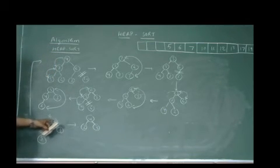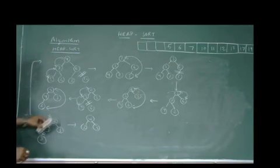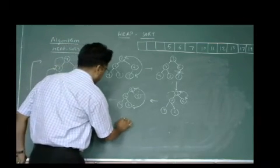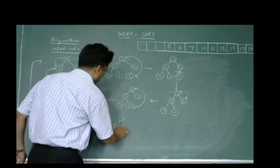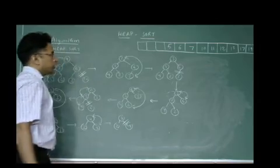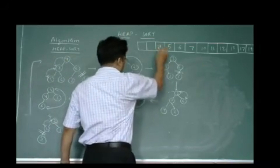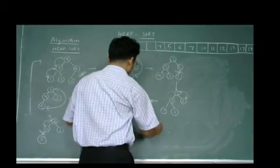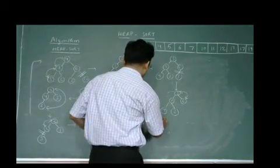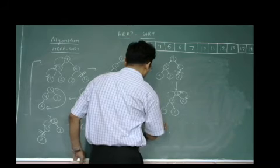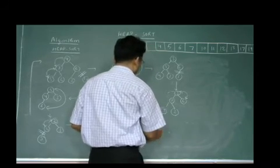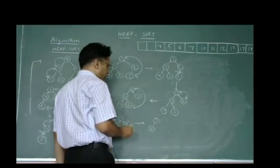Again the first element is swapped with the last element. After swapping: 3, 2, and 4. The 4 is removed and placed in the sorted array. After this we are left with just 2 elements. We heapify again: it is already satisfying the criteria, giving 3, 2.